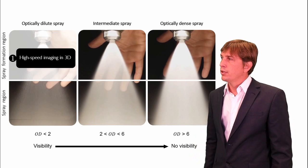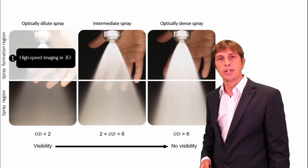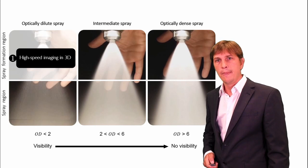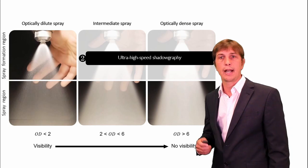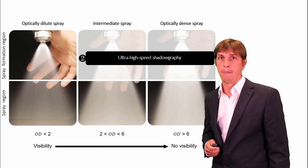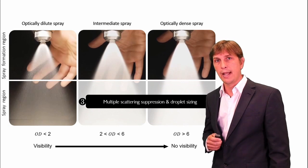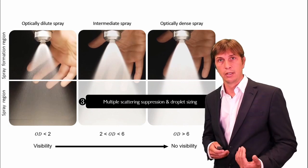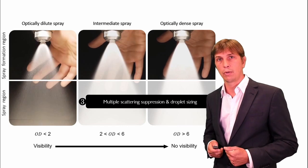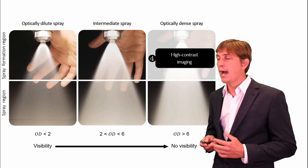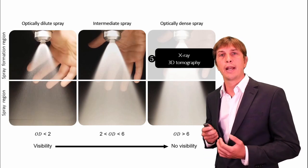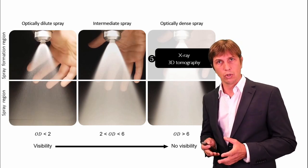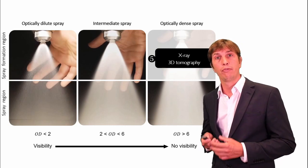In this presentation, I will talk about high-speed imaging in 3D. Then I will talk about how we can do ultra-high-speed shadowgraphy. After that, I will explain the suppression of multiple scattering and how we can do droplet sizing in the spray region. Finally, I will talk about high-contrast imaging of the spray formation region in optically dense sprays, as well as X-ray tomography for 3D reconstruction of liquid volume.